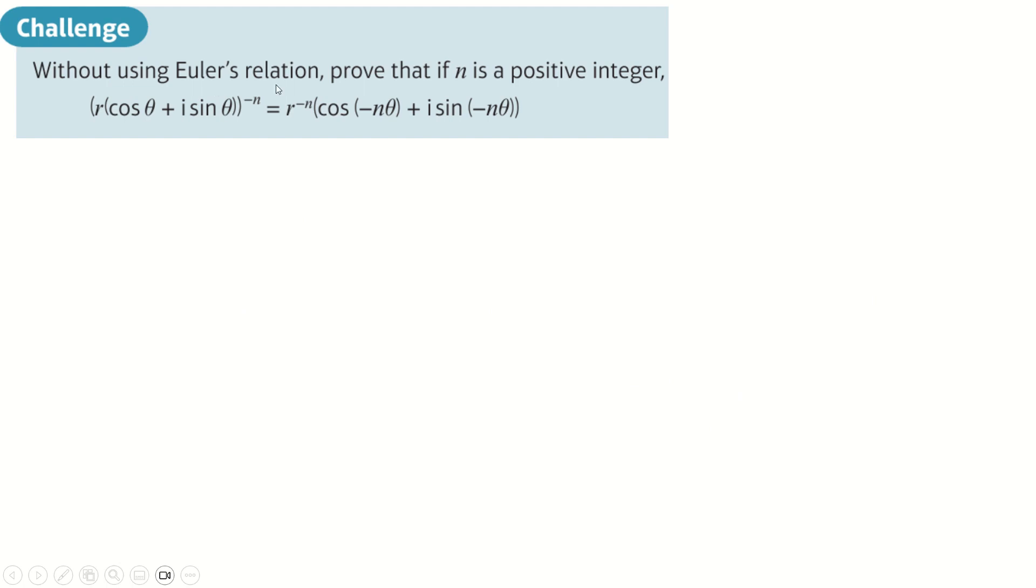Next one, without using Euler's relation. So Euler says e^(iθ) is cosθ plus i sinθ. Not allowed to use that. Show this here. So I can use what we learned last question, which is one over z^n instead of the minus n. So I can write this like this. And now I can use De Moivre's to say this is r^n. They haven't stopped using De Moivre. r^n and then cos nθ and sin nθ here. And now this is a difficult spot. How are we going to get cos minus nθ and sin minus nθ from this here? And how do we get rid of this denominator?